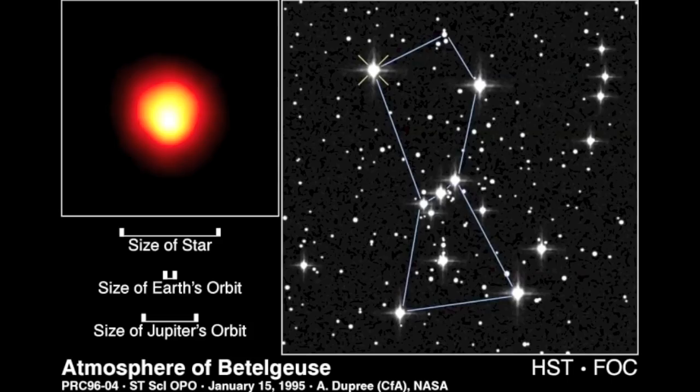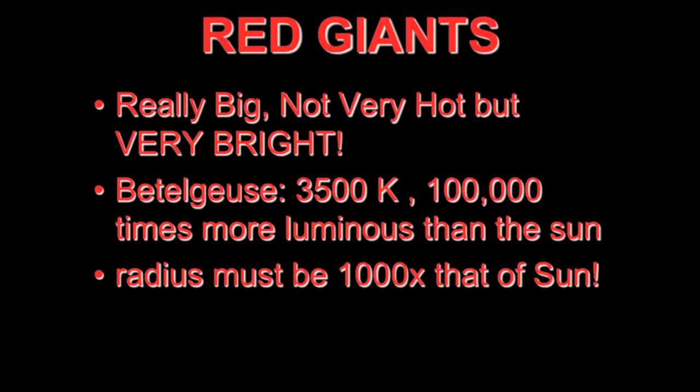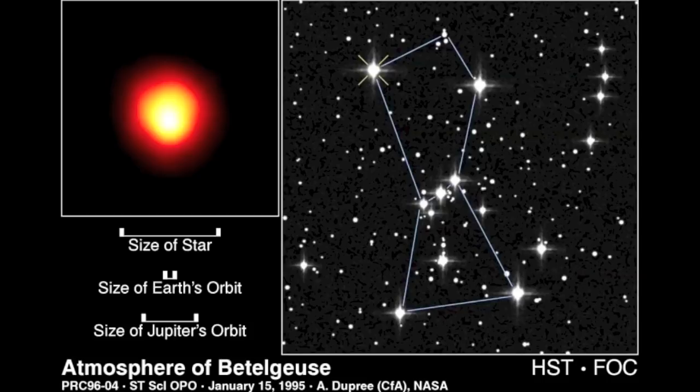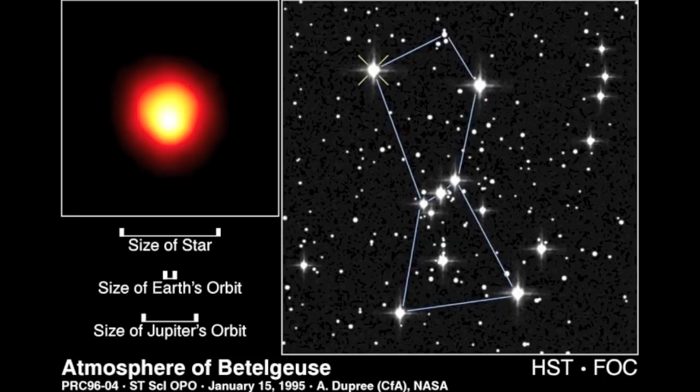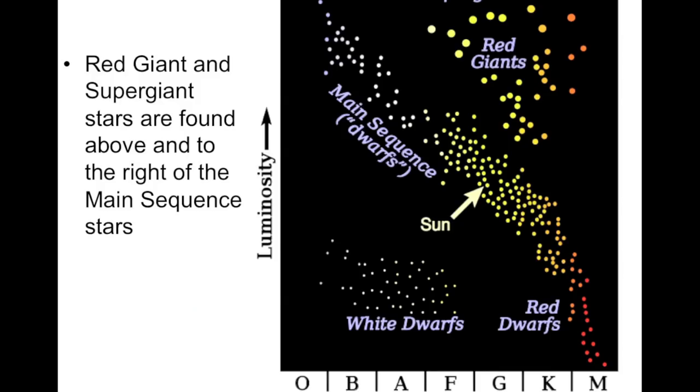It's so large that, with a telescope, you can actually measure the diameter of Betelgeuse. If you were to place a star like Betelgeuse, a red giant, into our solar system, the edges would go beyond the orbit of Mars. Red giants are found in the upper right-hand corner of the HR diagram. So above and to the right of the main sequence.